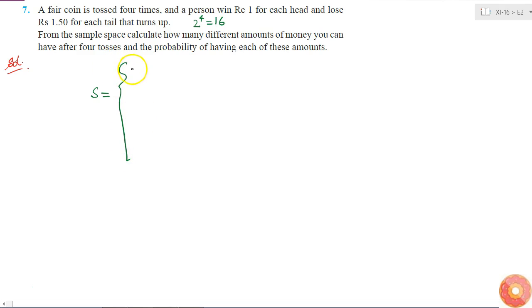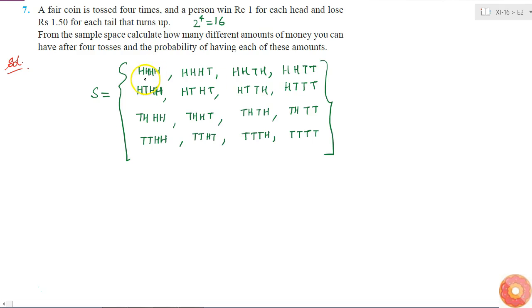If I write out all the 16 elements, it will be all four heads, and similarly if I complete the entire table, this will be my total sample space of 16 elements where each letter represents the outcome of that particular toss of the coin.